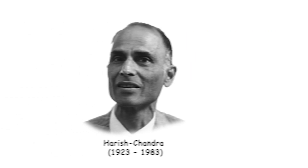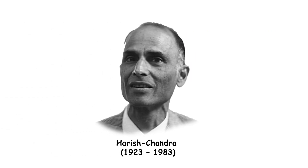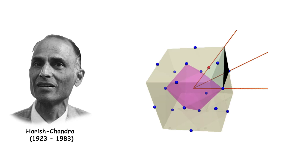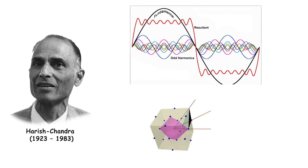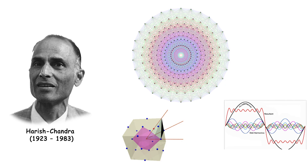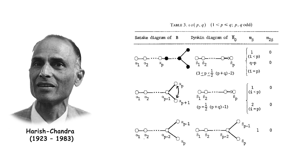Harish-Chandra was an Indian-American mathematician and physicist known for his work in representation theory and harmonic analysis on semisimple Lie groups. His development of the theory of Harish-Chandra modules and characters has had a lasting impact on the field. Harish-Chandra's work has influenced both mathematics and theoretical physics.